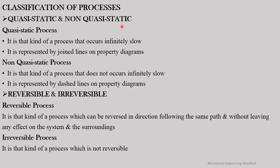Processes are broadly classified into two categories: quasi-static and non-quasi-static, and also reversible and irreversible. A quasi-static process is one that occurs infinitely slowly, and such processes are represented by solid lines on property diagrams. A non-quasi-static process does not occur infinitely slowly and is represented by dashed lines on property diagrams.